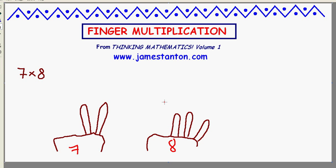Now, to compute the product 7 times 8, all we need to do is say that each raised finger is worth 10. So I currently have five fingers raised. Five tens makes 50.